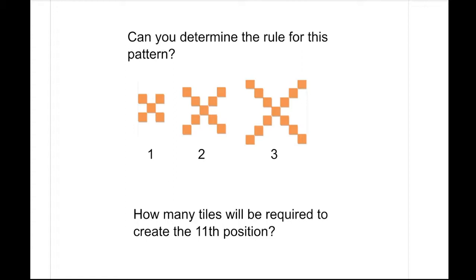So using what we've done before, there are multiple ways you could figure this out. It's a little bit harder to see which parts of our pattern are staying the same and which part is changing because we only have one color. You could look and see what the difference is between one pattern and the next, or from one position to the next. From step one to step two, step two to step three, and we should see that we're increasing by four every time.